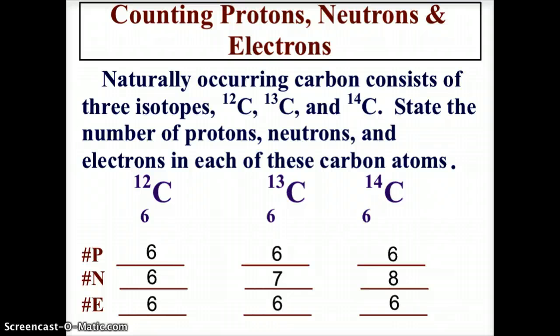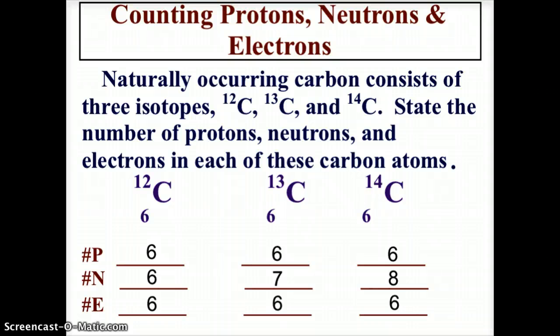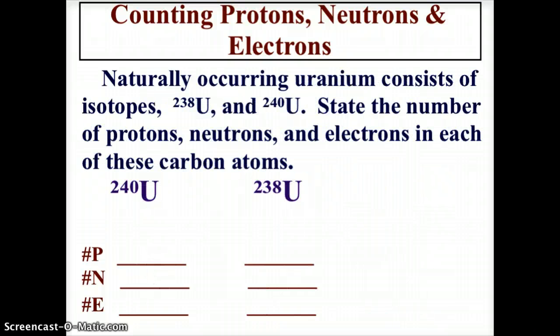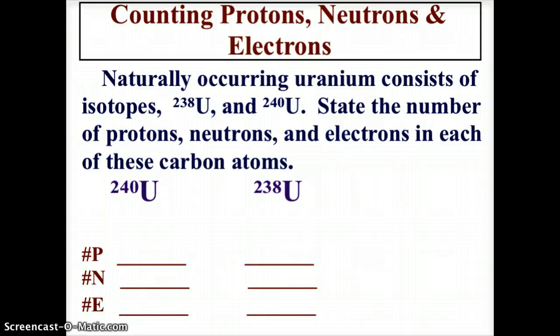In each of these cases the protons and electrons are equal because we're talking about a neutral atom - an atom without a charge. The isotopes are different because their mass is changed by increasing the number of neutrons. Now let's look at uranium, which comes in uranium-240 and uranium-238. Mentally figure out the number of protons, neutrons, and electrons, and then let's check to see how you did.